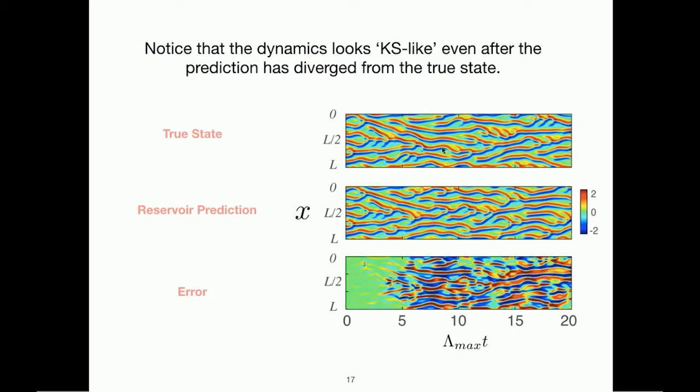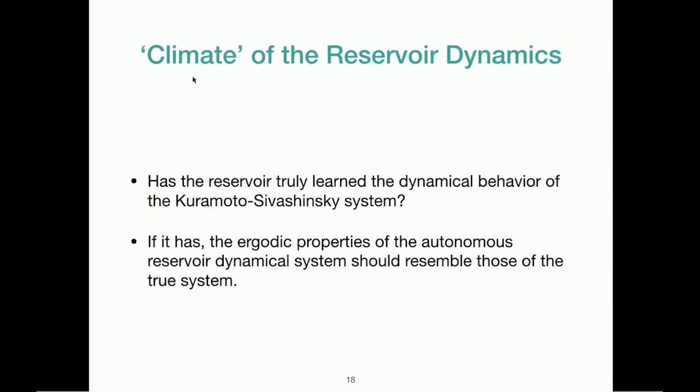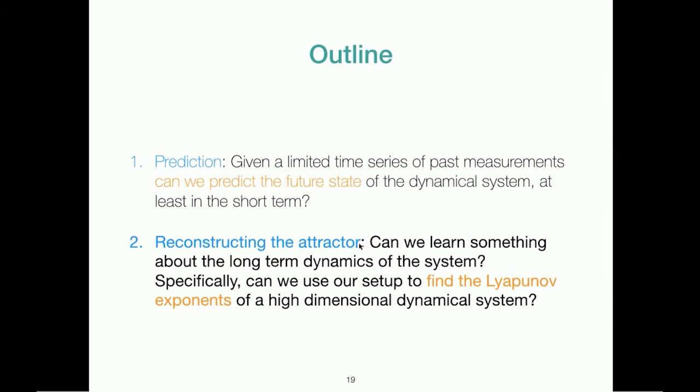By that, I mean that if I gave you these two panels, you wouldn't be able to tell which one came from the true equations and which one was produced by our reservoir setup. And so we tried to quantify this observation a bit further. We call this the climate of the reservoir dynamics, by which we mean the long-term ergodic properties of the reservoir dynamics. And we asked, has the reservoir truly learned the behavior of the Kuramoto-Sivashinsky system? And if it has, the ergodic properties of the autonomous reservoir dynamical system should resemble those of the true system.